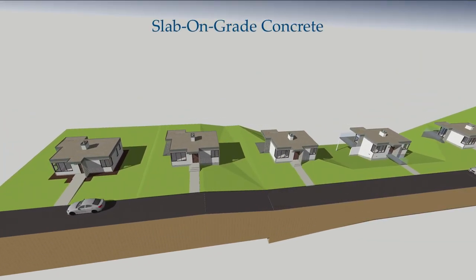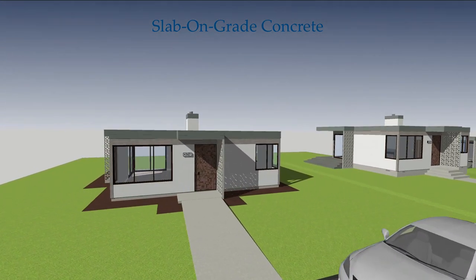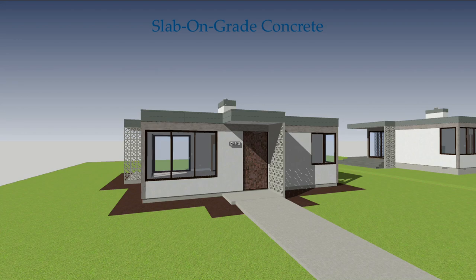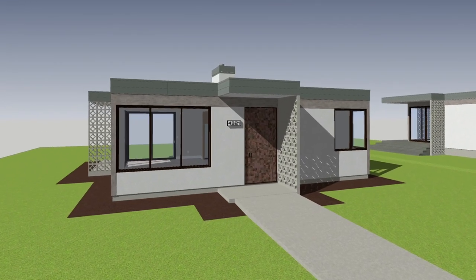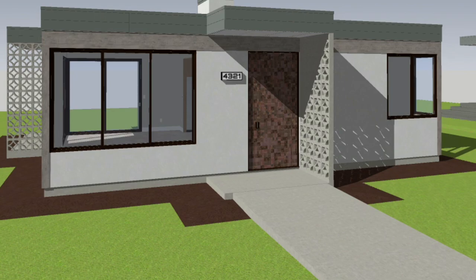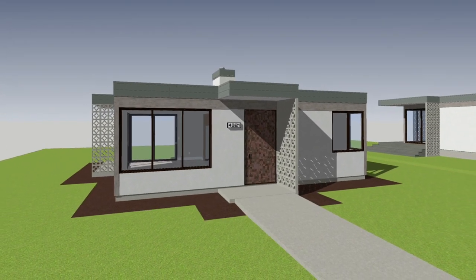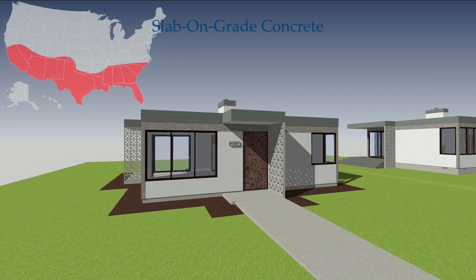Concrete slab on grade foundations serve warm climates best, where occupants desire a seamless indoor-outdoor living sequence. Most residential structures from Florida to Texas and Southern California employ this earth-hugging configuration. Because this configuration with a monolithic pour does not reach deep into the earth, you will not find it in areas where the ground produces a frost line — the depth at which the moisture content in the soil seasonally freezes. The warm climate of the Southern United States Sun Belt lacks a frost line, which allows the use of a slab on grade monolithic concrete foundation.